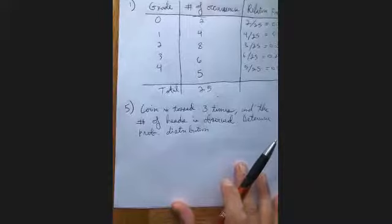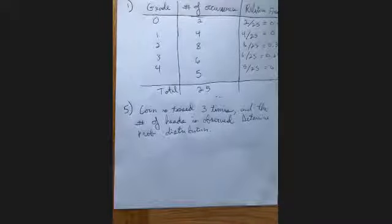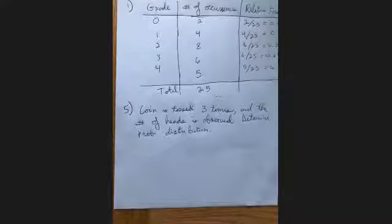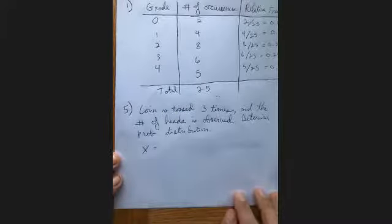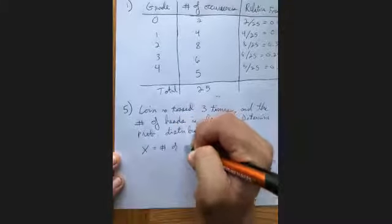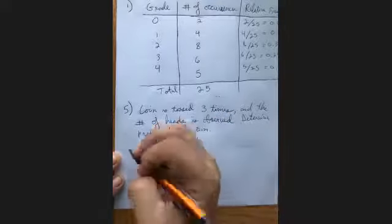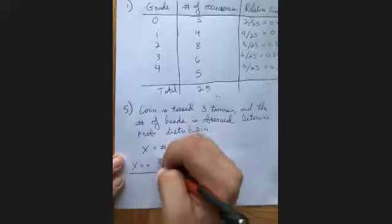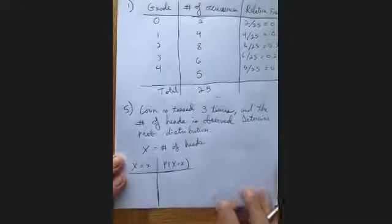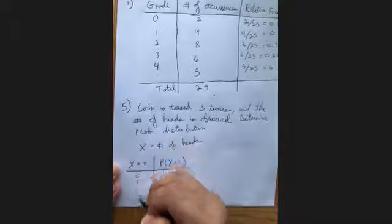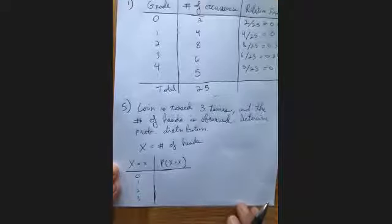Moving on to problem five — a coin is being tossed three times and the number of heads is being observed. We want to determine the probability distribution. To do this, we first define a random variable x as the number of heads, then we build a table showing the possible values for x — zero heads, one head, two heads, or three heads — and find the probability for each.